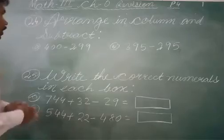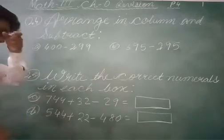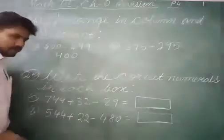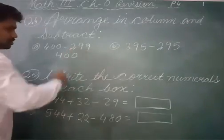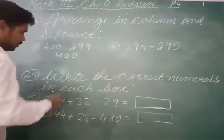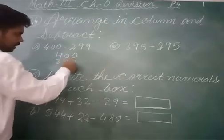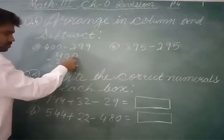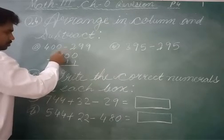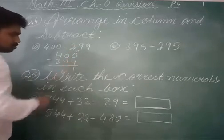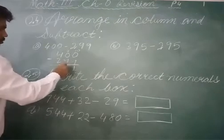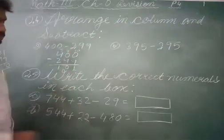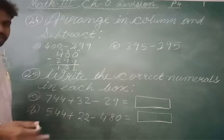The next type of problem is arrange in column and subtract. You have to arrange first and then subtract. Here, the ones digit is 0 and we need to subtract 9, so 0 is less than 9. We need to carry from the previous number, but there is nothing there — so take from the hundreds, making this 10. 9 plus 1 is 10. This is how you do the subtraction. Do the remaining subtractions by yourself.